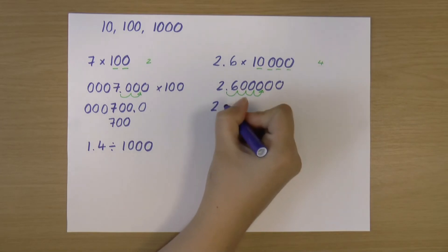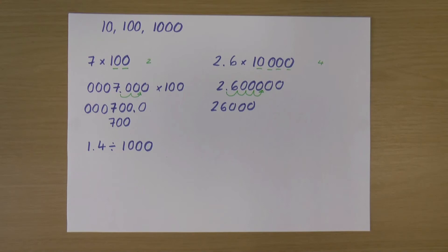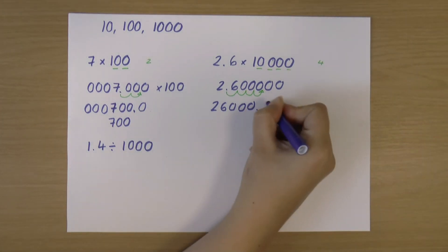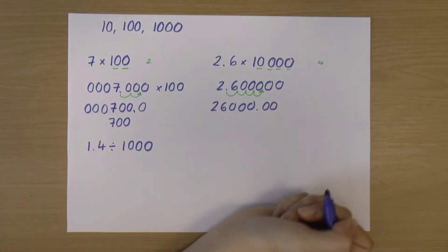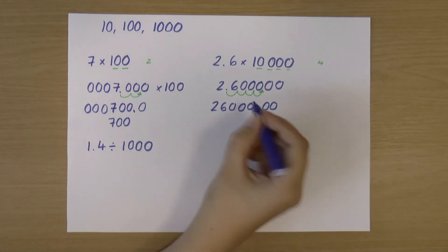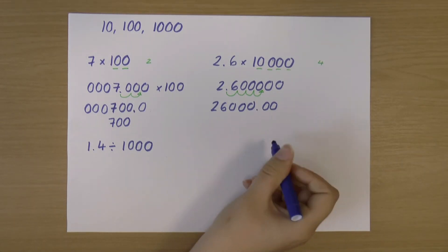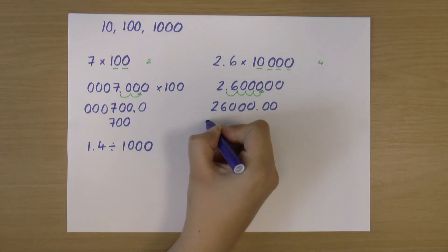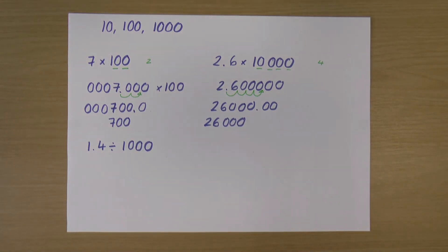That's where my decimal point is moving to. It has moved from there to there, between those two 0s. And I've still got a couple of 0s on the end. It doesn't really matter. It means the same thing. But 2.6 times 10,000 is 26,000. Great. And that works for all multiples of 10 when you're multiplying by them.